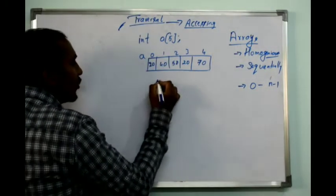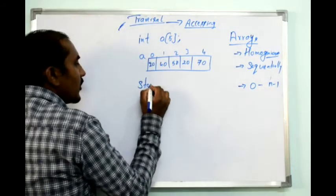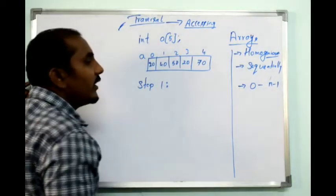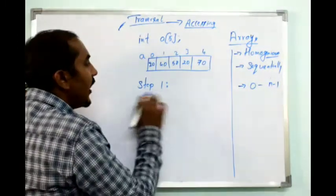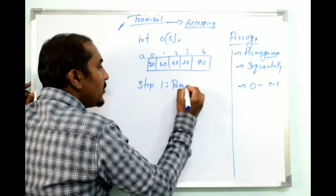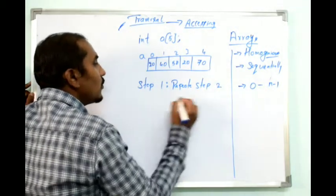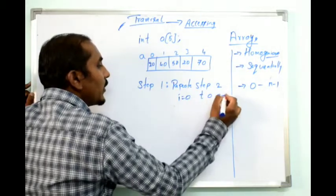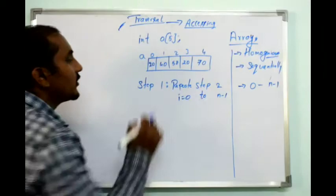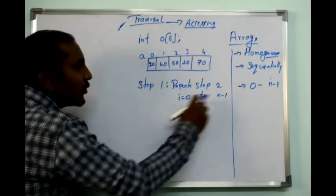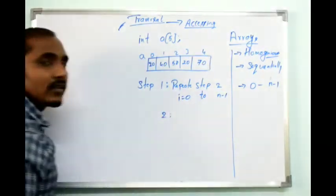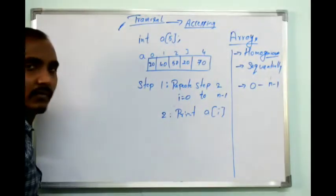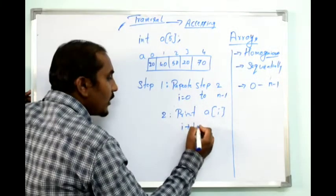If I want to write an algorithm for traversal: Step 1 — repeat step 2 for i equals 0 to n minus 1. Step 2 — print the value of a[i], and increment i: i equals i plus 1.